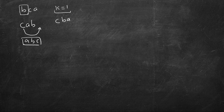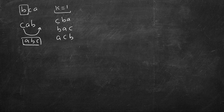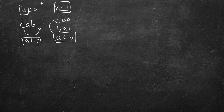Take 'cba' with k=1. Moving c gives 'bac', moving b gives 'acb', moving a gives back 'cba' — the original string. After n rotations we cycle back, so for k=1 with 'cba' we cannot fully sort it and must return 'acb', the minimum we found.